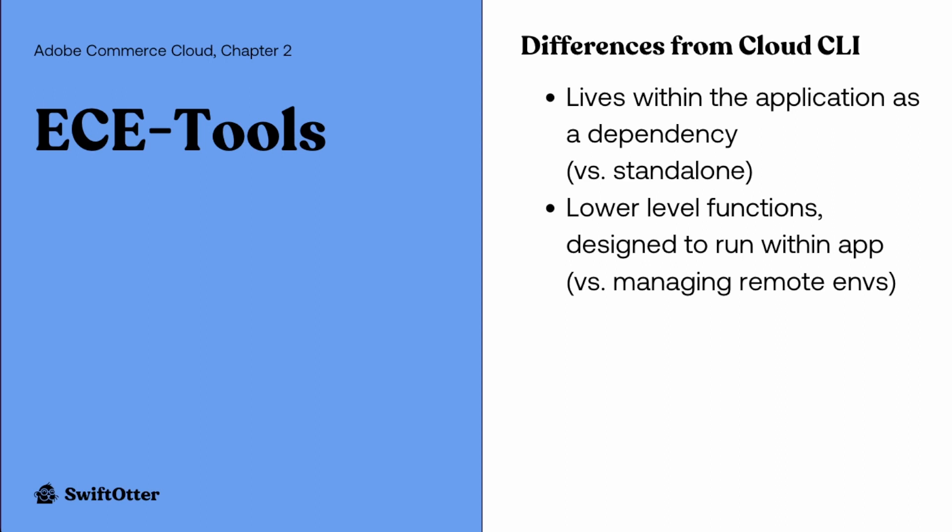The CLI tool, even though it can in fact affect the state of code if you run it in the context of a project — such as Git branch checkouts and merging — really is more focused on managing things in your remote cloud environments. Whereas the ECE tools package is focused on lower level functions that are designed to actually run in an environment and to manage processes and tasks.